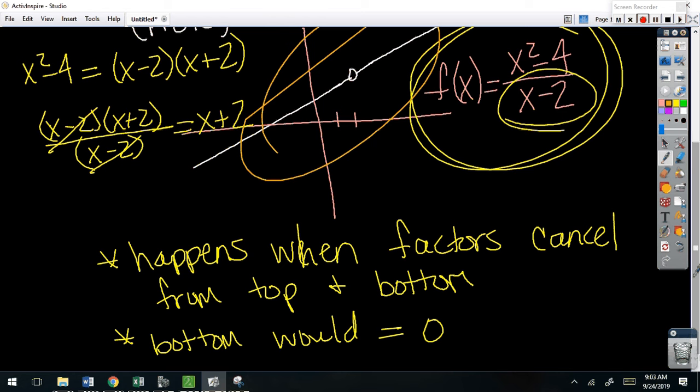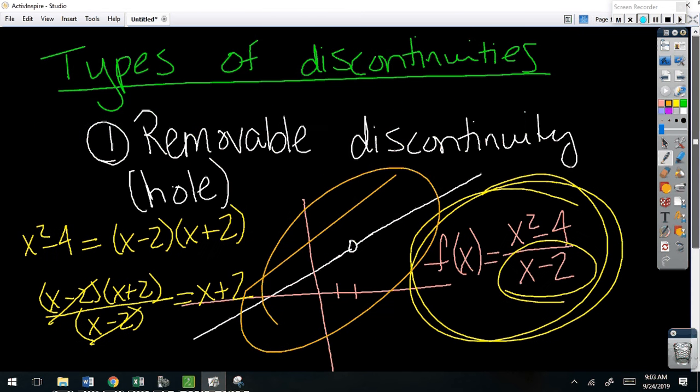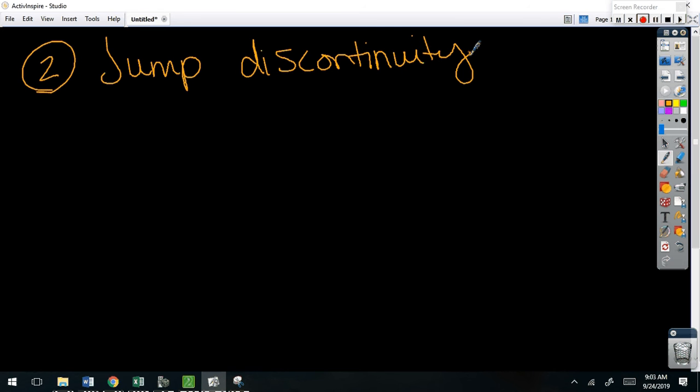Can y'all not look so down? All right. The next one is what we call a jump discontinuity. And this is what I showed you the first time. Usually this is what we call a piecewise function.